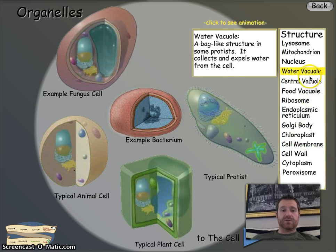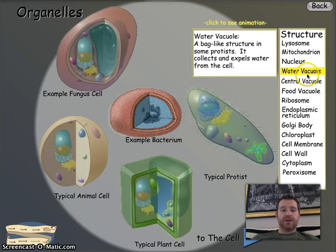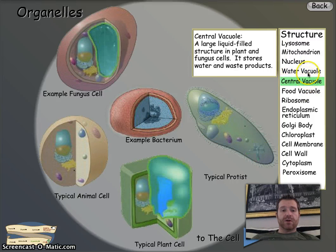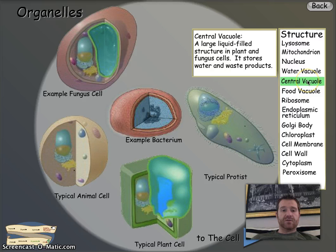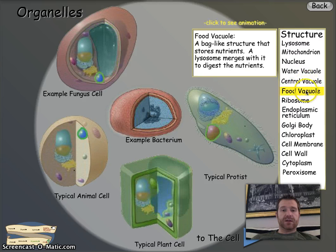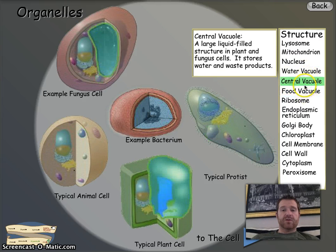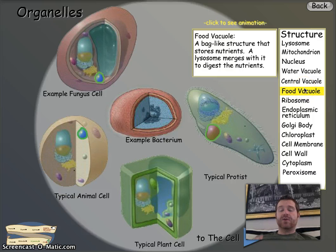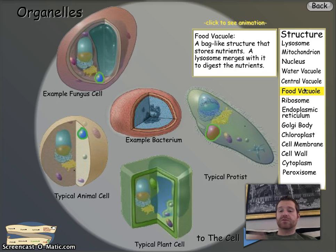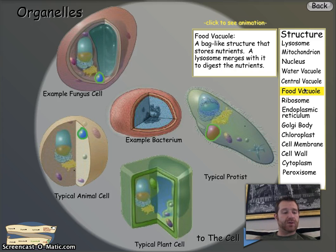The vacuole is interesting on this, because there are three types. Scrolling through: the water vacuole is in the plant, the central vacuole is in the plant, and the food vacuole is in just the animal. So there is a vacuole in both plants and animals. For the definition, just put stores food and water — and it's in both plants and animals.